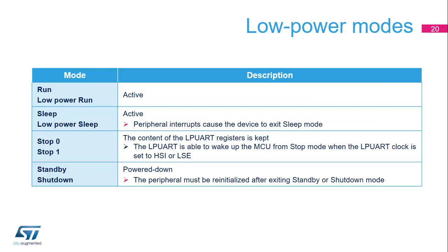The LPUART peripheral is active in run, sleep, and low power modes. The LPUART interrupts cause the device to exit sleep and low power sleep modes. The LPUART is able to wake up the MCU from stop 0 and stop 1 modes when the LPUART clock is set to HSI or LSE. USART reception is functional in stop mode and generates a wake-up interrupt on start, address match, or received frame event. In standby and shutdown modes, the peripheral is powered down and must be re-initialized after exiting standby or shutdown mode.